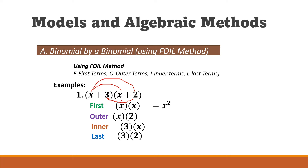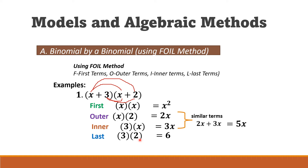After that, we multiply: x times x is x squared, x times 2 is 2x, 3 times x is 3x, and 3 times 2 is 6. We combine similar terms: 2x plus 3x equals 5x.